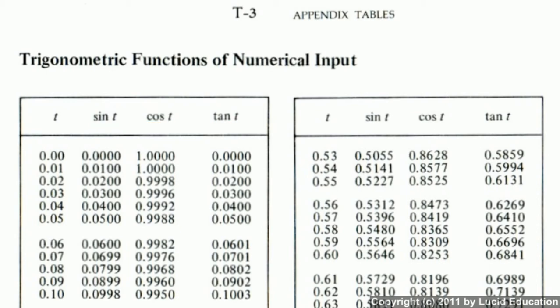And these angles here are actually in radians rather than in degrees. But if you needed to know the sine or cosine or tangent of an angle, you would look it up in the table. So if you wanted to know the tangent of .09, you would come over here and find the value.